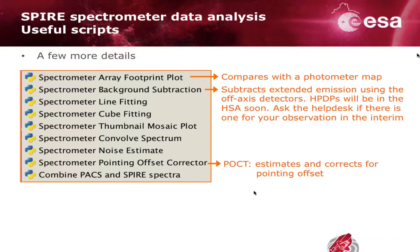There's also the spectrometer pointing offset corrector script, POCT, which estimates and corrects for pointing offsets for point sources. However, it uses SECT, so it has a HIPE dependency.